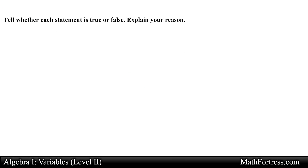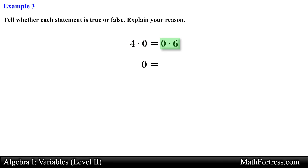Let's try the next statement: 4 times 0 is equal to 0 times 6. Again we need to simplify each expression to appropriately compare them. The left-hand side simplifies to 0 and the right-hand side simplifies to 0. It turns out that 0 is equal to 0, so this statement is absolutely true.